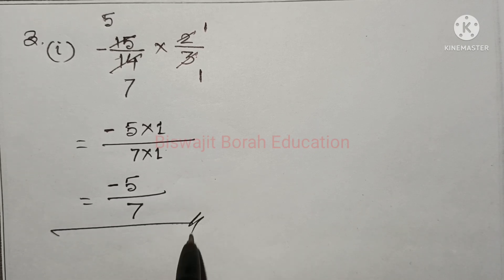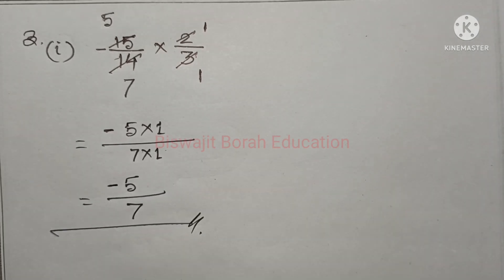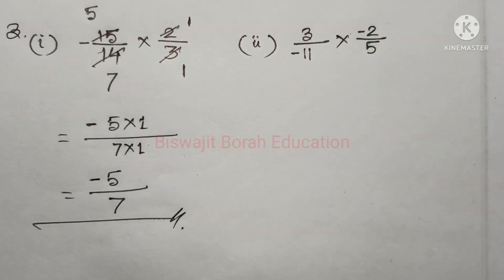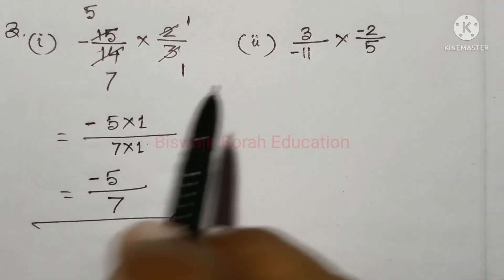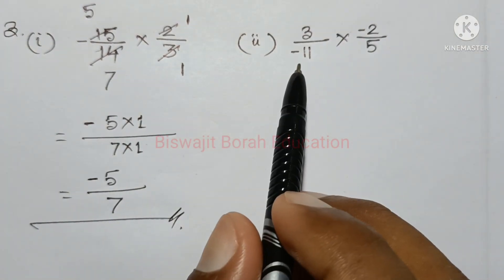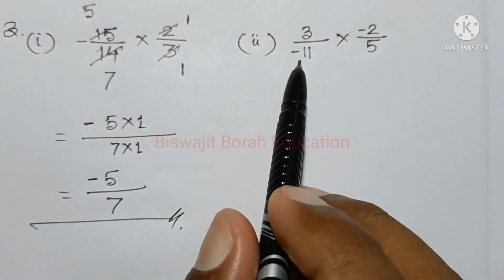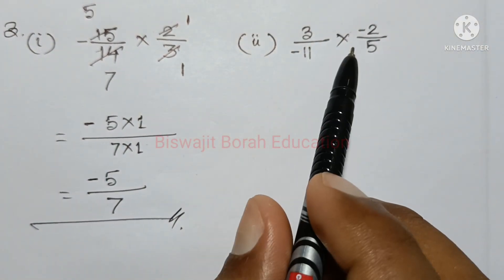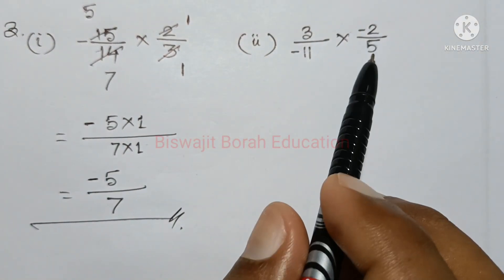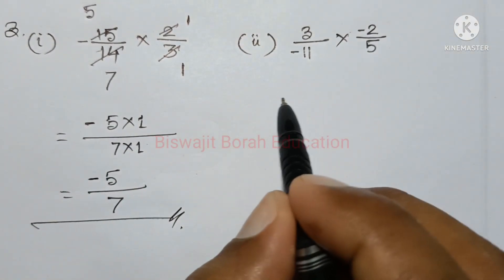So, this is the next 2nd number. The 2nd number is 3 by minus 11, into minus 2 by 5.